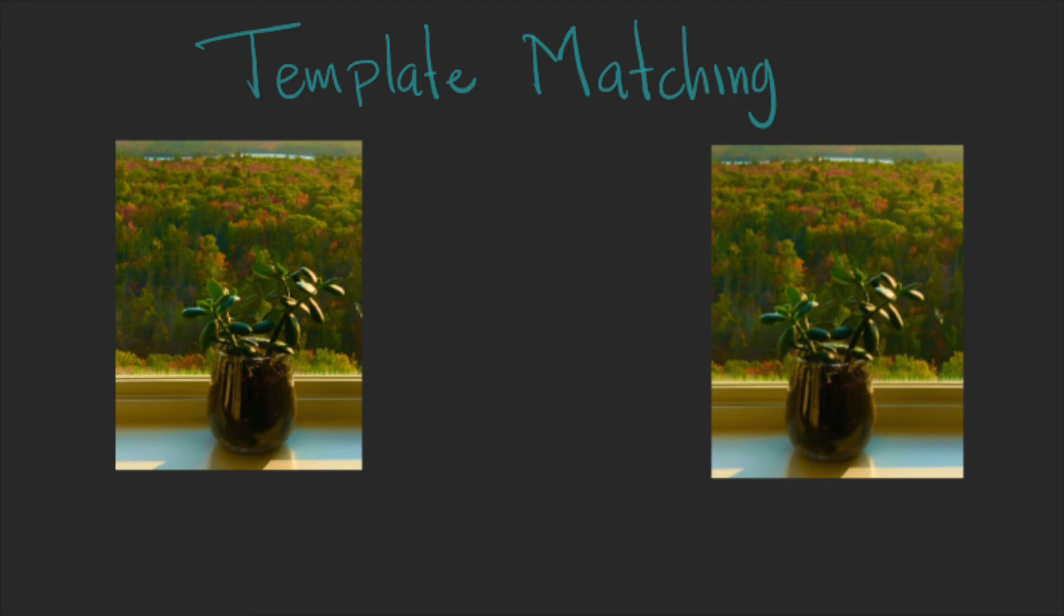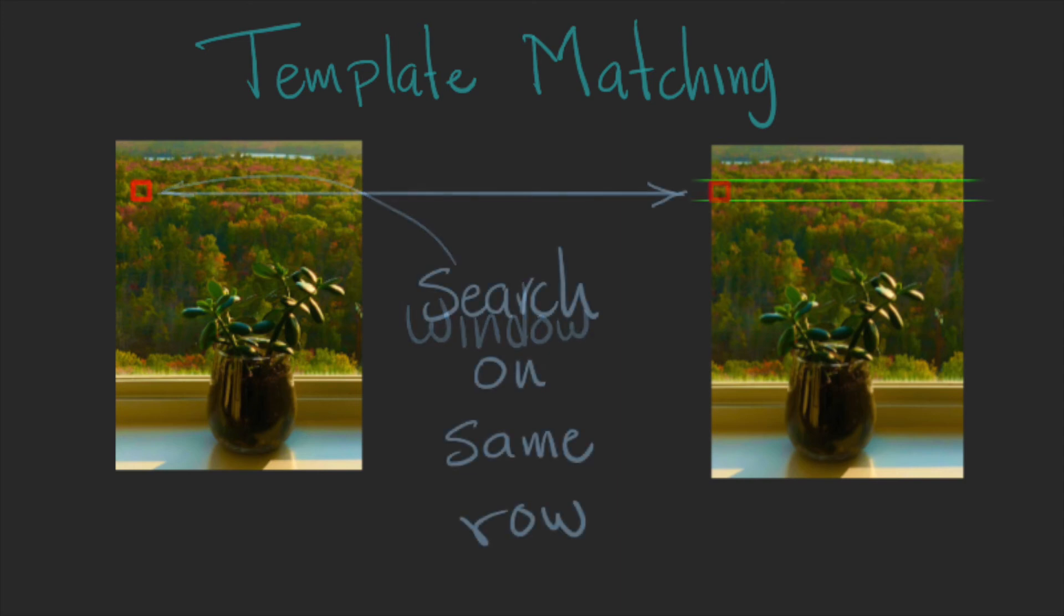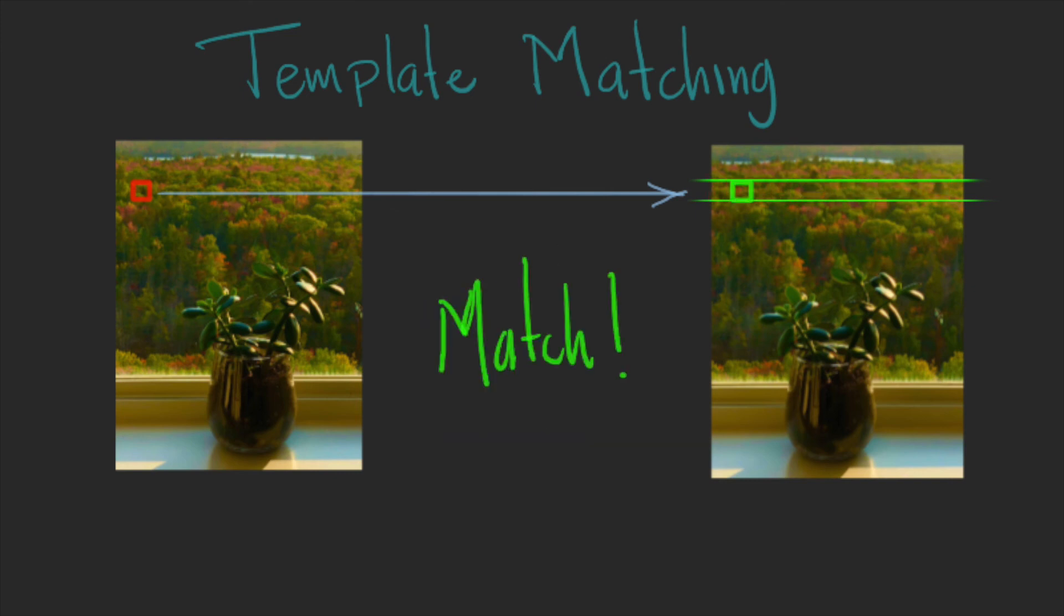So, we can create a small window, and we look over the same row until we find a match. Again, because of our setup, there's no need to search in another part of the image.